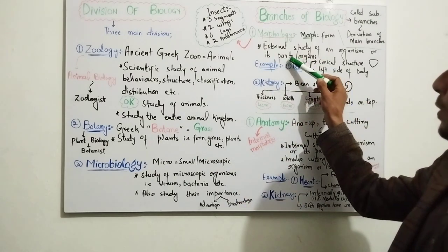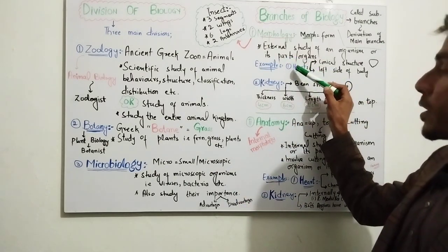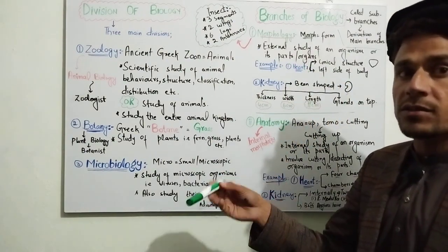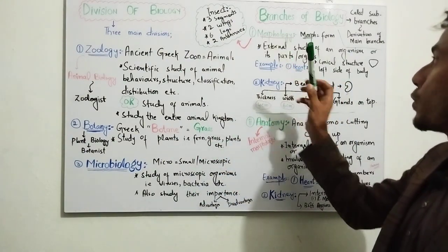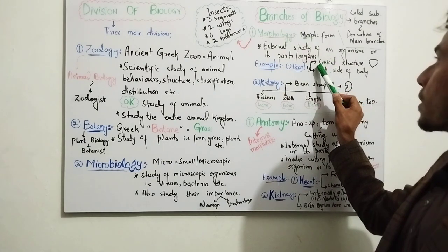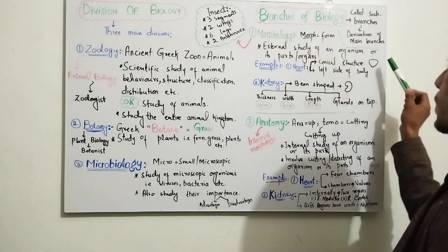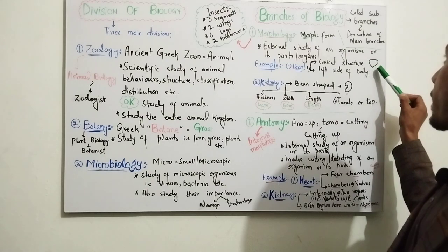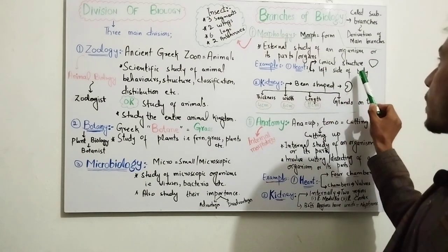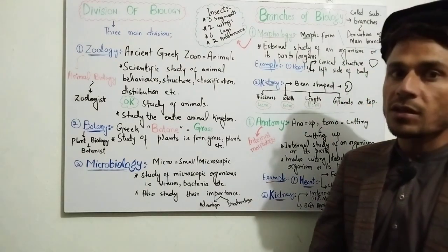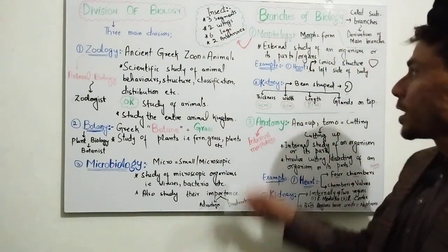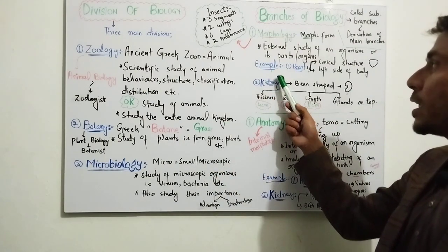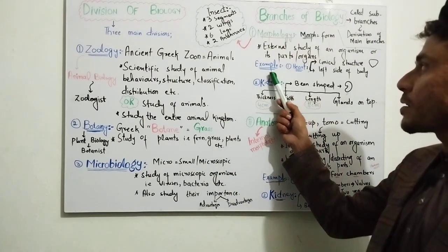For example, if you study the heart, morphology refers to its external or outer study. The heart has a conical shape — you study its shape or diagram. It is located on the left side of the body. This external study of the heart is morphology. Similarly, the kidney's external study is also morphology.